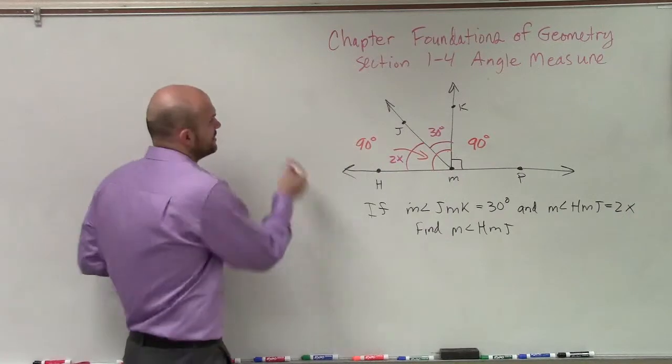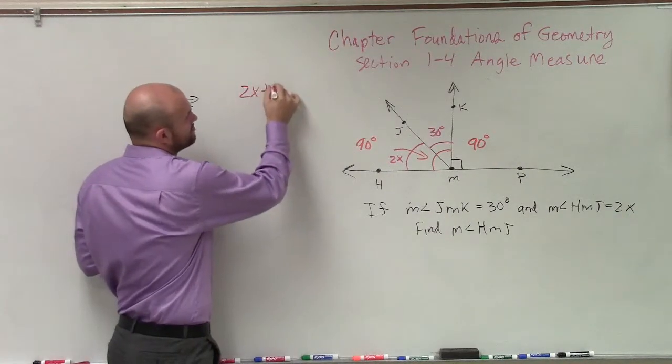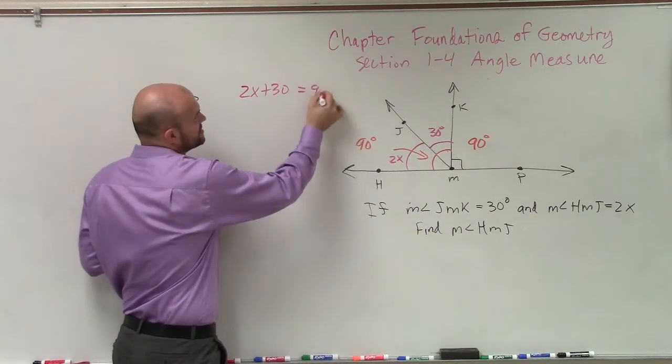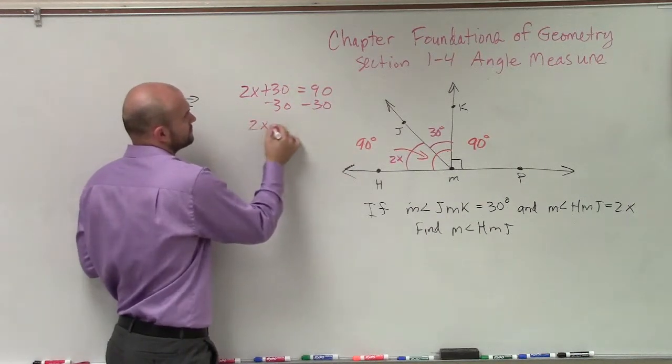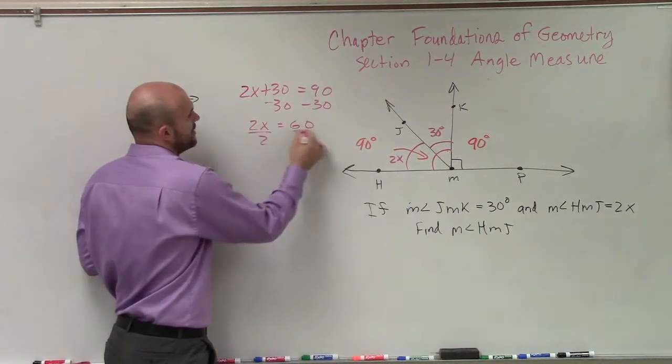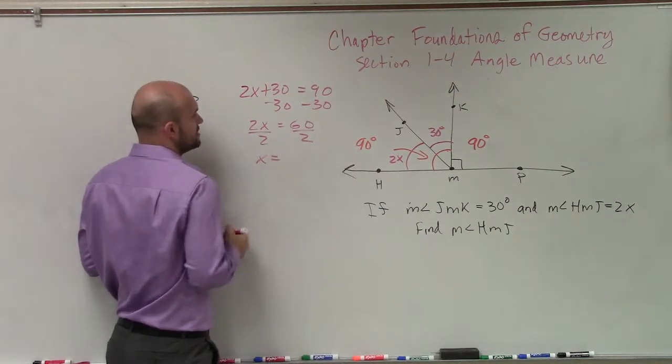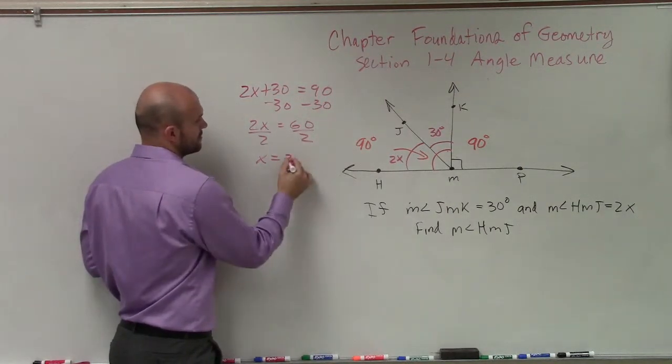So what we can do is write an equation. And our equation can be 2x plus 30 equals 90. Then we solve, solve for x, I'll give you time, ladies and gentlemen. So x equals 30.